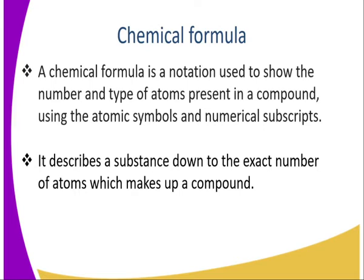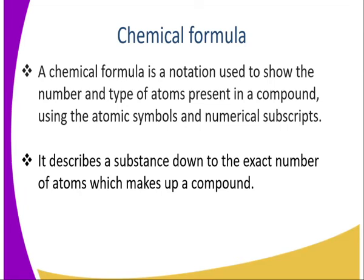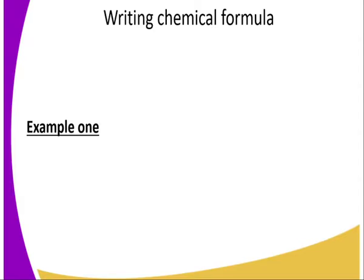Remember a compound? Two or more substances which are chemically combined. So what is the ratio of their combination? It describes the substance down to the exact number of atoms which make the compound — that is the number, the ratio, as we had said previously.